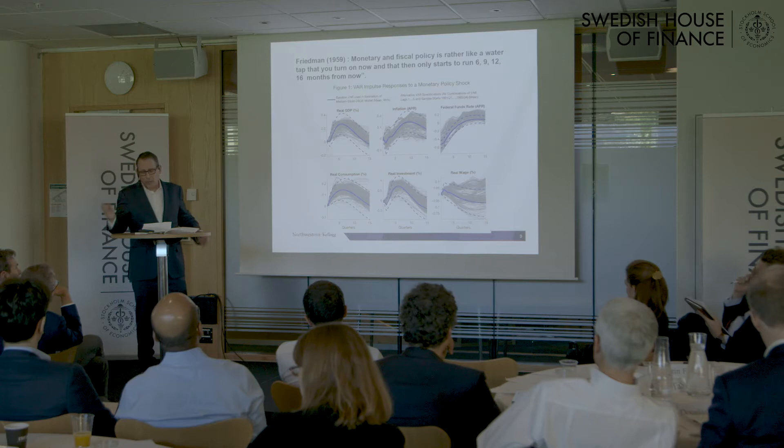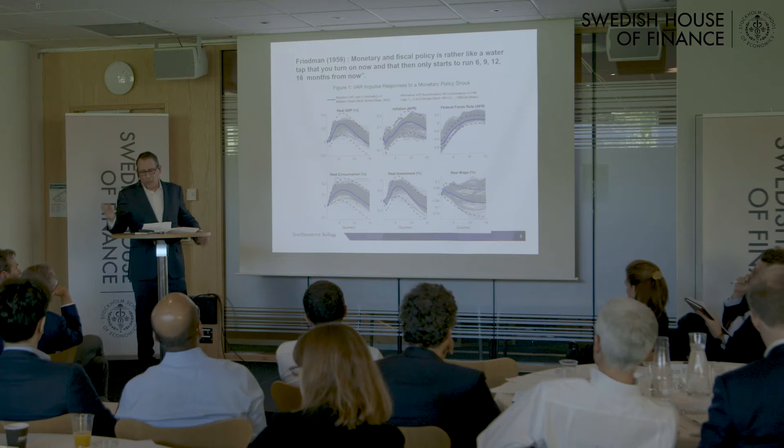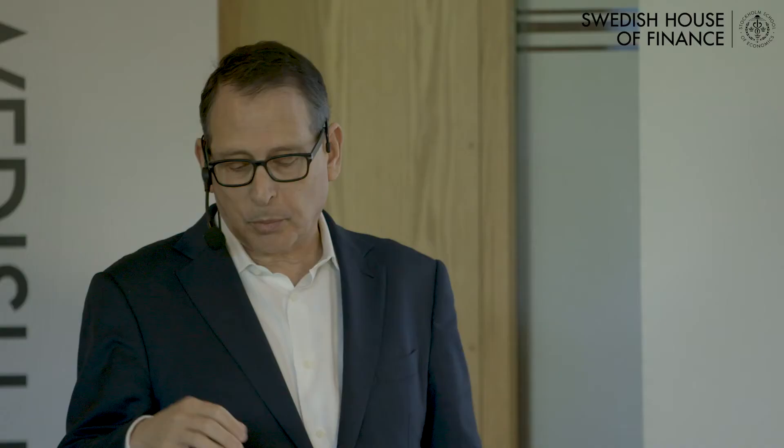We had imperfect competition in goods and labor markets, because if you're going to have a sticky price or wage, somebody's got to set it. Then we went with Calvo-style frictions, assuming that firms and households could change prices or wages with some exogenous probability, and they had to satisfy demand whatever demand materialized at the time.